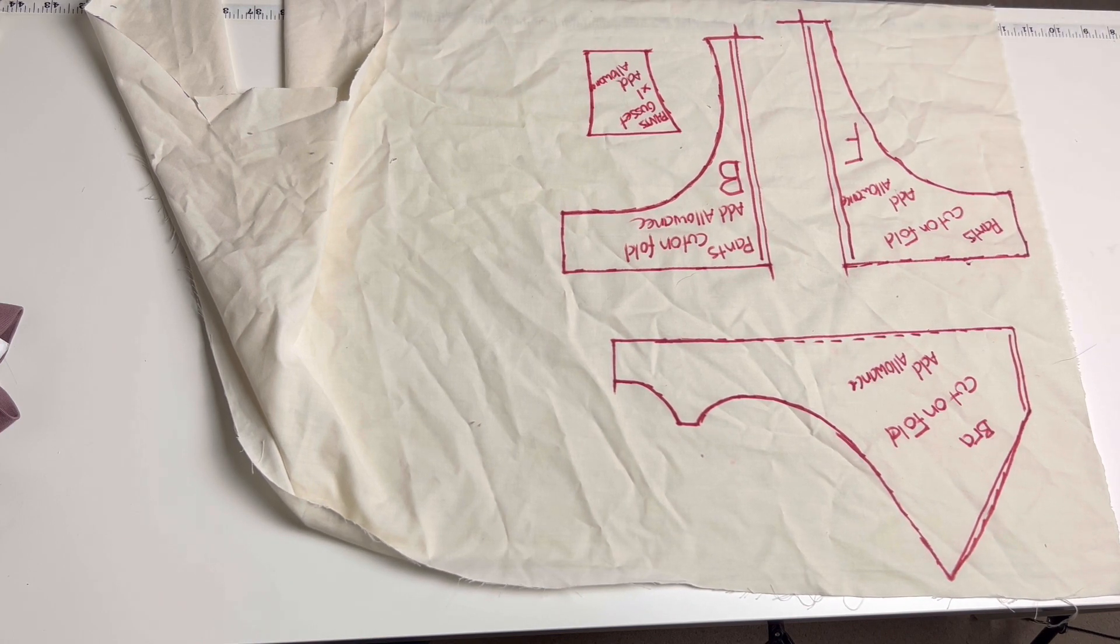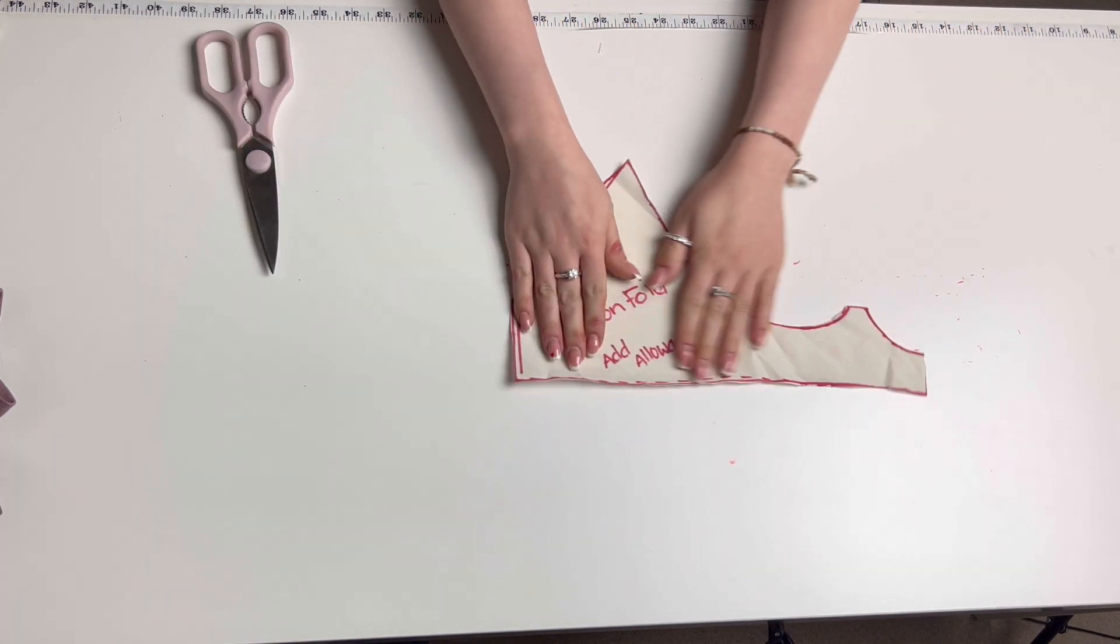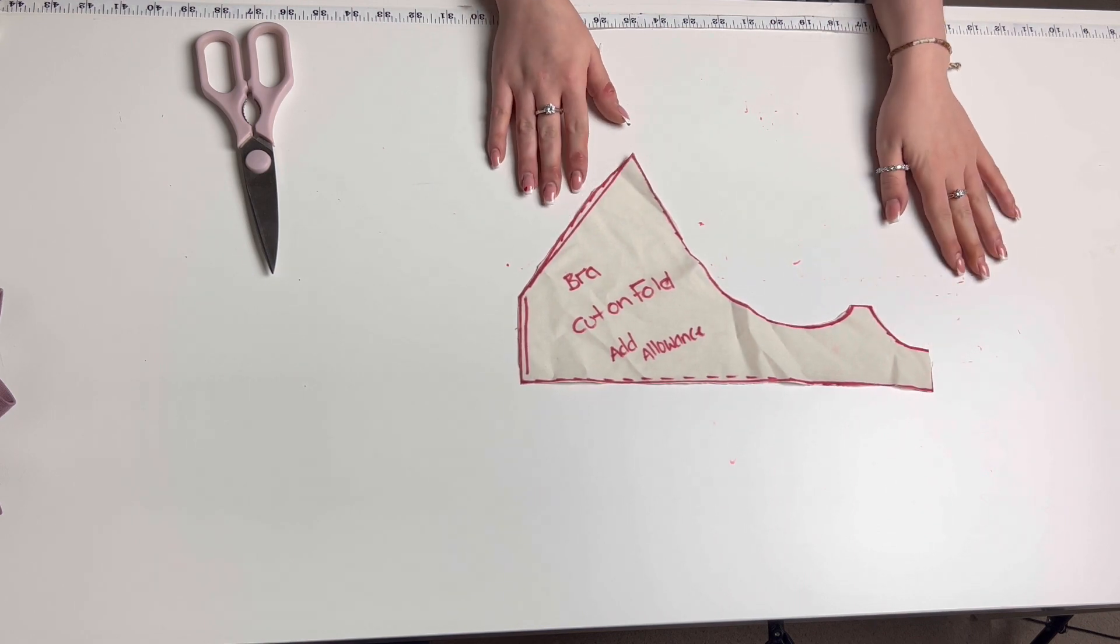Now you should have all your pattern pieces. You should have one bralette piece and three pieces for the pants.